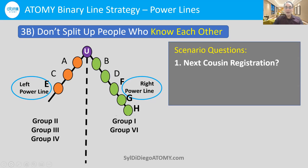That's why you should put Cousin Mary on the right side with family, so that when Cousin Mary gets Uncle Al to use the products and sign up, Uncle Al and Cousin Mary will both be on the right side with the family and you'll all have synergy.